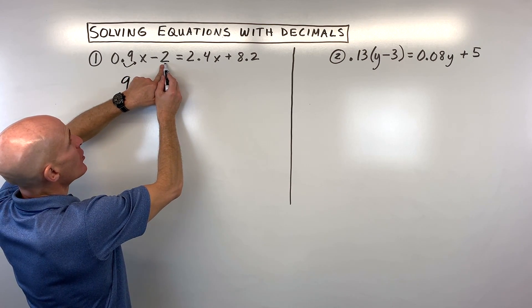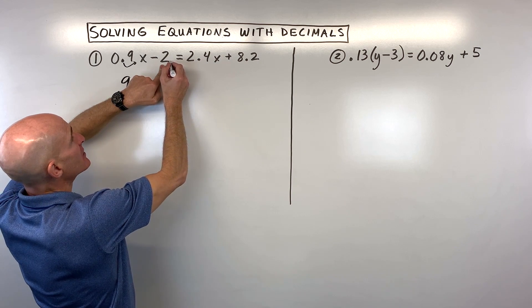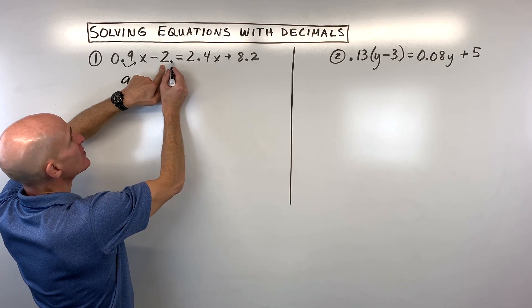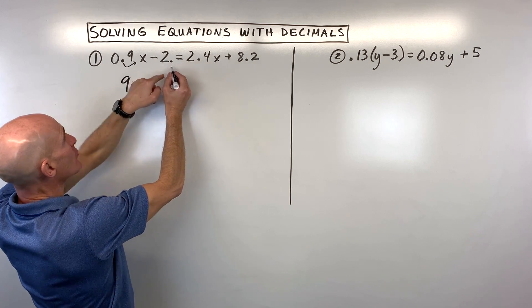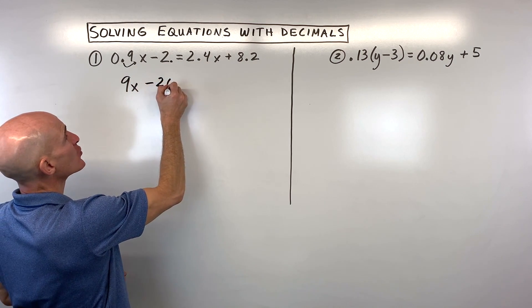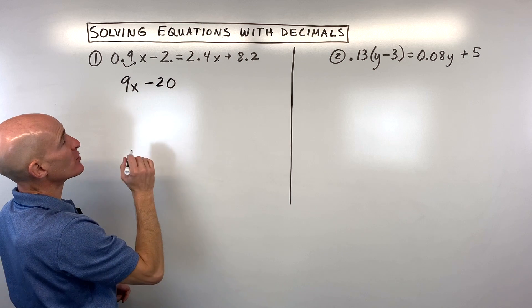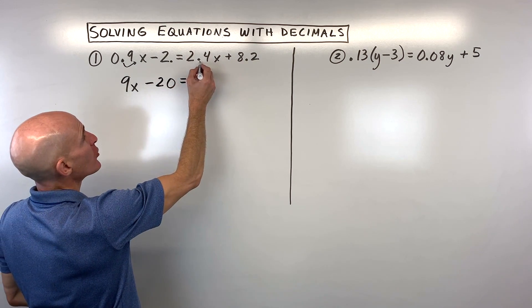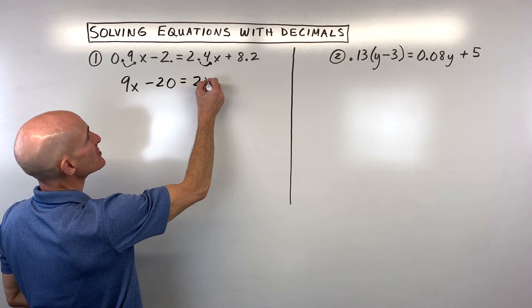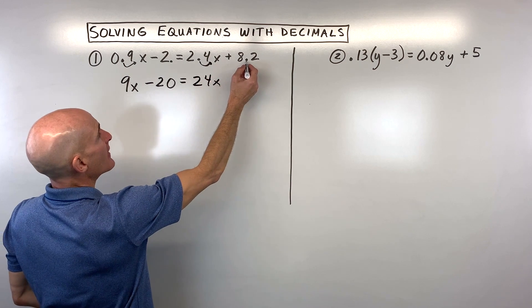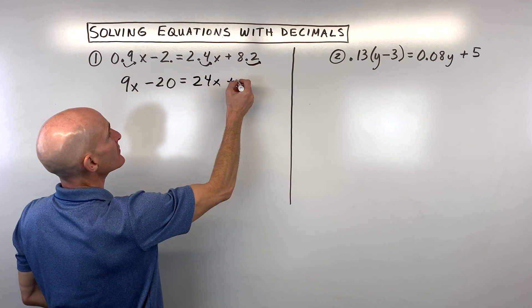You also want to make sure you multiply the 2 by 10, and you don't see the decimal—that means it's understood to be right here on the right side. So if I move that one place to the right, this is actually going to make this 20 because I have to put a zero as a placeholder. Same thing here: if I multiply this by 10, that's going to give us 24x, and then this one we multiply by 10, that's going to give us 82.